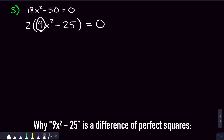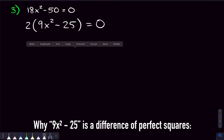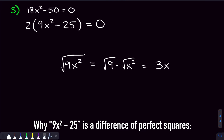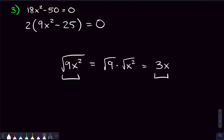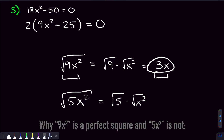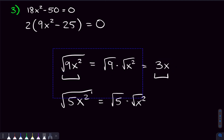If you look closely, 9x squared minus 25 is a difference of perfect squares. You might be used to seeing x squared minus 25, but 9x squared is also a perfect square because the square root of 9x squared equals the square root of 9 times the square root of x squared, which is 3 times x, giving us 3x. That's something nice. Compare that to something like the square root of 5x squared, where the square root of 5 is not a nice number.